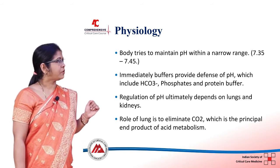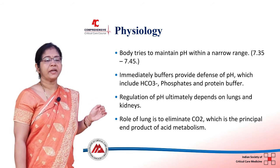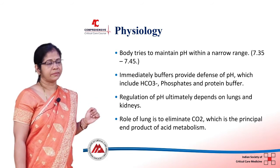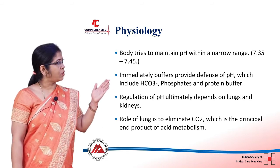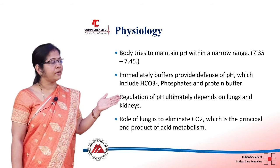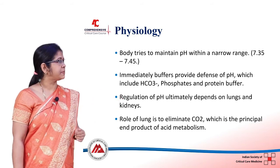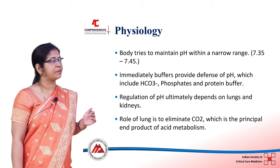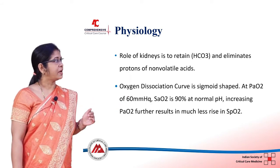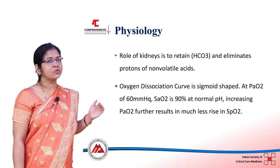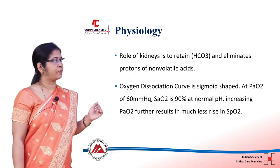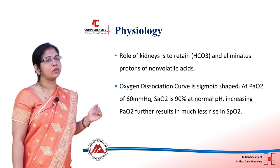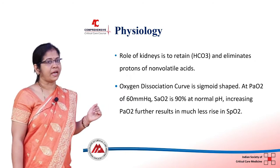Regulation of pH ultimately depends on lung and kidney. The role of lung is to eliminate carbon dioxide, which is the principal end product of acid metabolism. The role of kidney is to retain bicarbonate and eliminate protons of non-volatile acid.